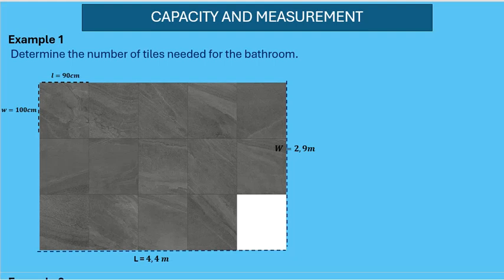This is a capacity and measurement example. Determine the number of tiles needed for the bathroom. If you want to know how many tiles will fit into this bathroom, we can take the length of the bathroom and divide it by the length of a tile. We have the length of the bathroom at the bottom: 4.4 meters, and the length of the tile on top: 90 centimeters.